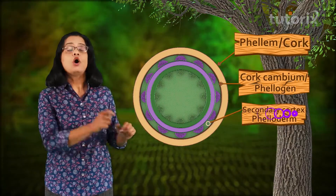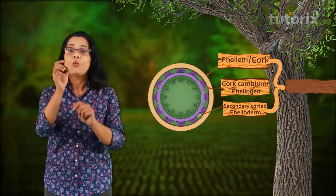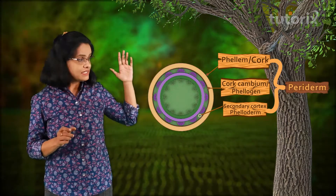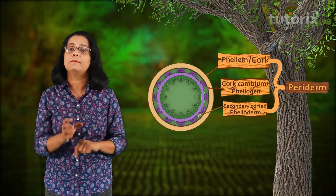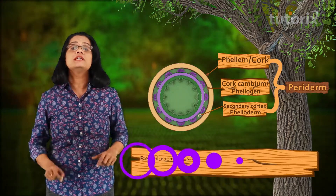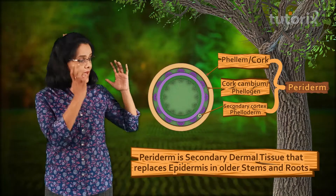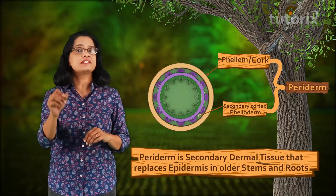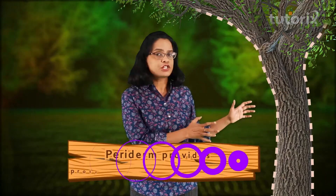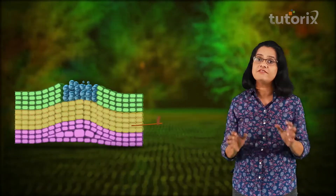Phelogen (cork cambium), phelim (cork), and pheloderm (secondary cortex) together make what is known as periderm. Periderm is a secondary dermal tissue that replaces the epidermis in older stems and roots, providing the function of protection to the outer parts of the tree.